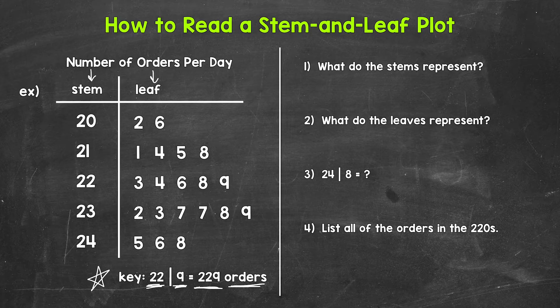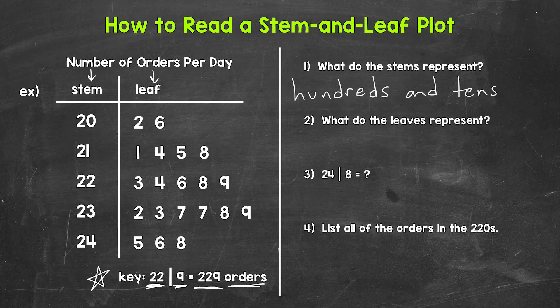Now, looking at numbers 1 and 2, what do the stems represent and what do the leaves represent? The stems represent the hundreds digit and the tens digit. And then the leaves represent the ones digit.